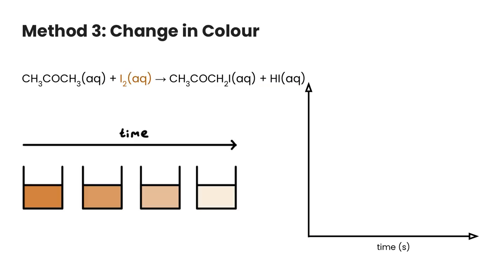The third method involves a change in color. So if you have a reaction that involves either the appearance or the disappearance of a color, you can monitor that with a piece of equipment called a spectrophotometer. And this will give you a unit of measurement of absorbance. So basically, the higher the absorbance, the more color there is.